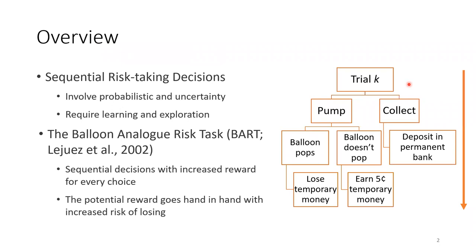People are faced with choices like running a yellow light or smoking a cigarette every day. These risky decisions are often not one-shot and deterministic, but made repeatedly and involve uncertainty. Sequential risk-taking tasks are designed to study these decisions, and they have a unique advantage of incorporating learning and exploration in the decision process, making different demands on our cognitive systems than one-time risky choices. Therefore, they have the potential to reveal more than a single construct of risk-taking propensity.